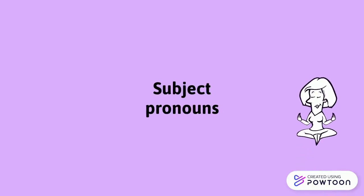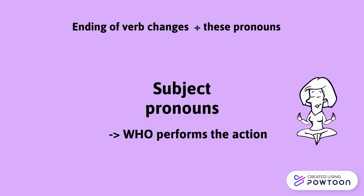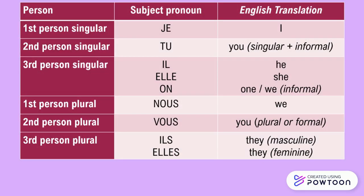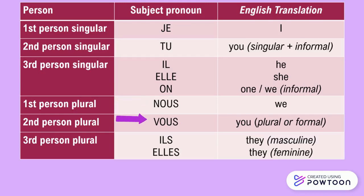Subject pronouns indicate who performs the action expressed by the verb, and the ending of the verbs changes depending on these pronouns. The first person singular: je, I. The second person singular: tu, you. The third person singular: il, elle, on — he, she, it. The first person plural: nous, we. The second person plural: vous, you. The third person plural: ils, elles — they.